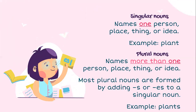So what is a singular noun and what is a plural noun? The singular noun names one person, place, thing, or idea — for example, plant. However, the plural noun names more than one person, place, thing, or idea. Most plural nouns are formed by adding s or es to a singular noun — for example, plants.